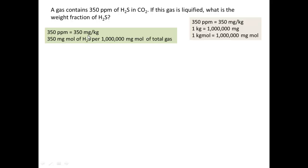If we have 350 ppm, that's like 350 mg per kg. We can say that we have 350 mgmol of H2S per 1 million mgmol of total gas. What is the total gas? The total gas is H2S and CO2, the sum of these two gases.